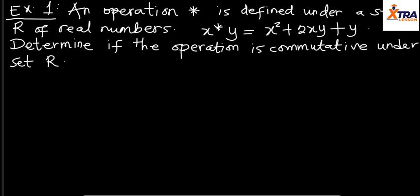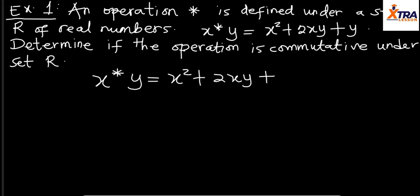For commutativity, we'll consider some examples. In this first example, we have an operation asterisk defined under the set ℝ of real numbers: x★y = x² + 2xy + y. We need to determine if the operation is commutative under set ℝ.